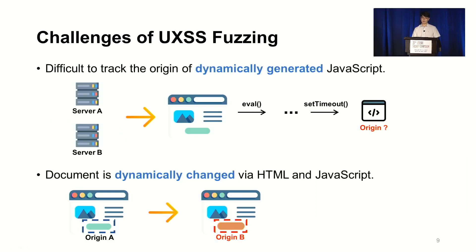Executing this idea has several challenges. The first challenge is that it is difficult to track the origin. Basically, JavaScript doesn't have a concept of origin tracking, so we don't know where the script came from when it is dynamically generated, such as in an event. Timer functions like setTimeout or event handlers are also difficult, since scripts are not executed immediately. The second challenge is that the document is dynamically mutable. Since the document is dynamically created and changed through the DOM API or JavaScript, it is difficult to check the correct origin because the document may differ from the initially loaded one. Moreover, navigation — which was not handled well in existing DOM fuzzers — must also be handled.